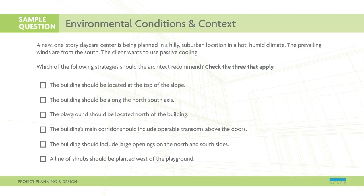Check the three that apply. The building should be located at the top of the slope. The building should be along the north-south axis. The playground should be located north of the building. The building's main corridor should include operable transoms above the door. The building should include large openings on the north and south sides. A line of shrubs should be planted west of the playground.